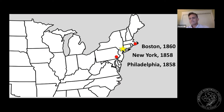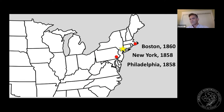Right around the same time as the ANS got started, two other societies were started in the US in the two big cities on the East Coast. One in Philadelphia, which beat the ANS to the title of being first by just a couple of months — getting started in January 1858, while the ANS started a few months later in March and April. And another group in Boston in 1860. Both groups had similar beginnings to the ANS, but really ended up on different trajectories.